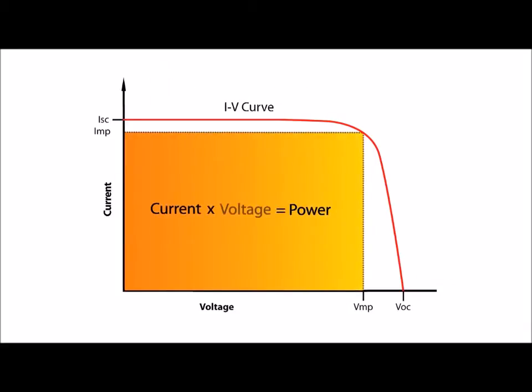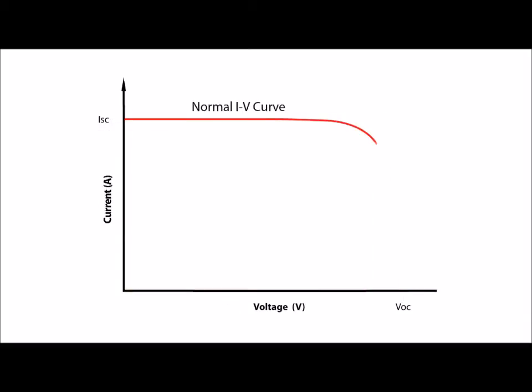Power is the product of current and voltage, thus maximum power is achieved at the knee of the IV curve. A full IV curve trace allows the observation of PV performance at and around the maximum power point. Further diagnostic value is derived from examining the shape of the IV trace.